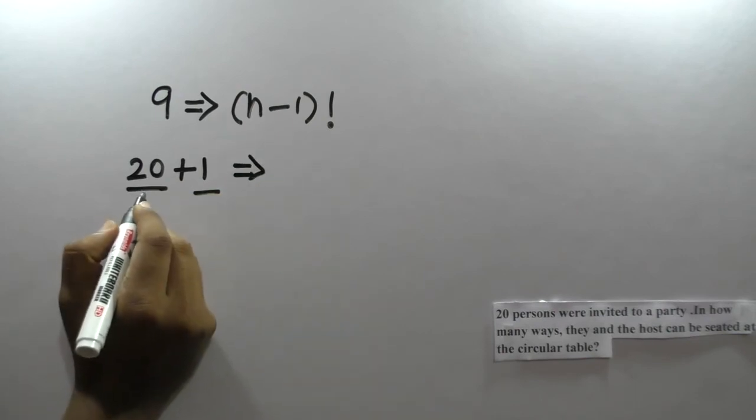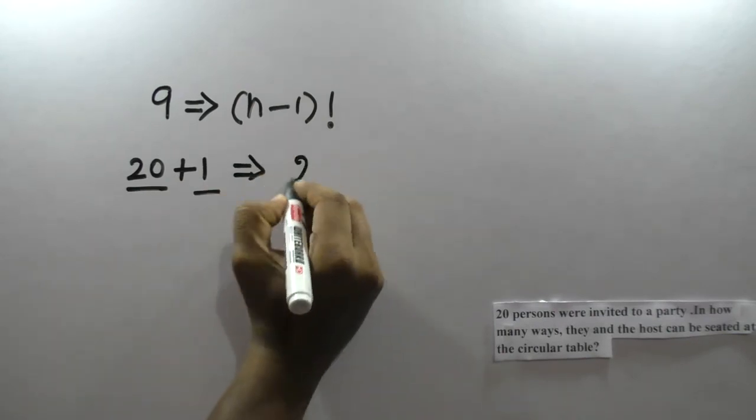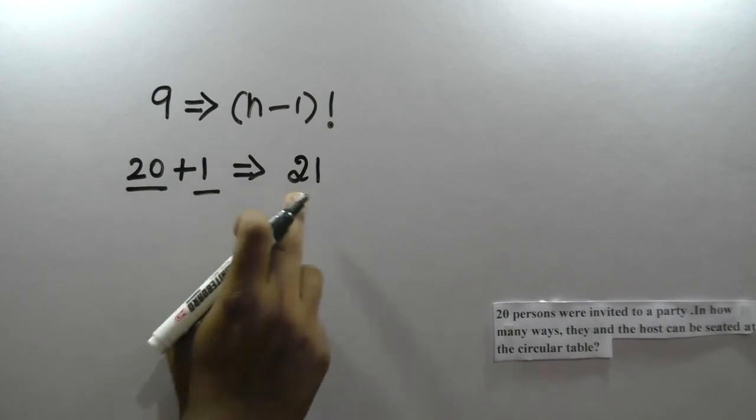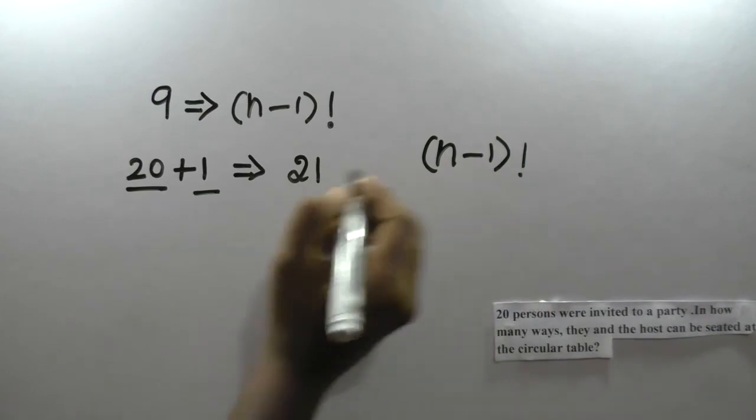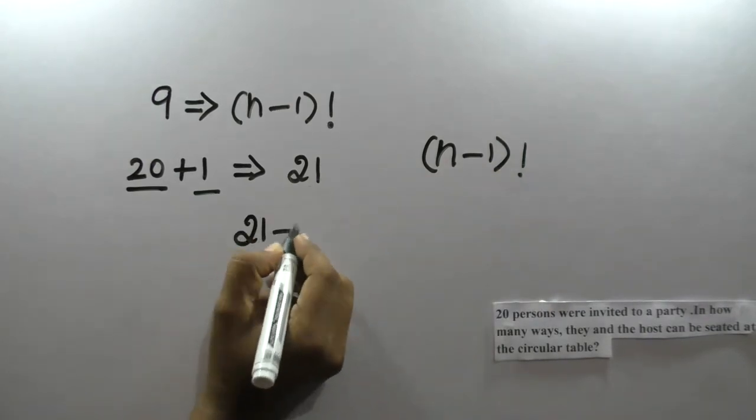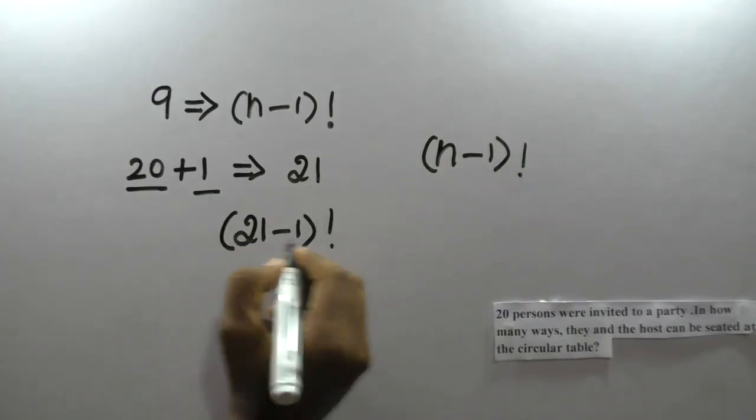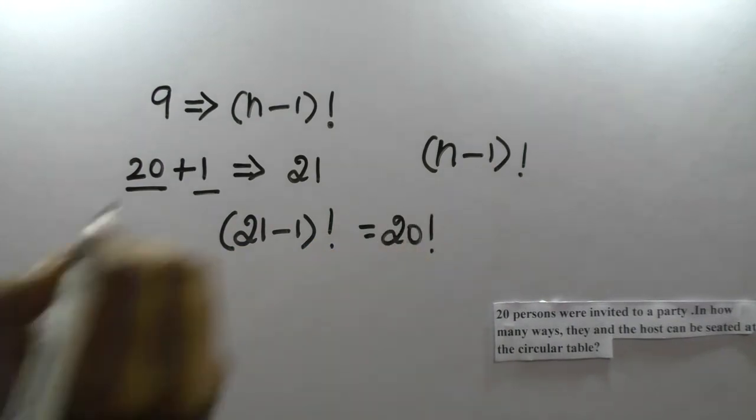If you have 20 persons, the total is 21. So if you have a circular table, (n-1) factorial is the formula. So (21-1) factorial, which equals 20 factorial, is the answer.